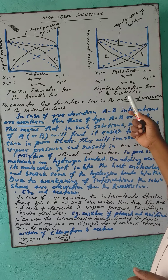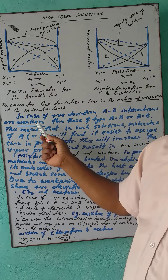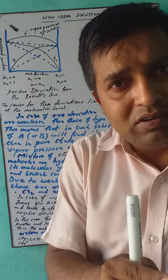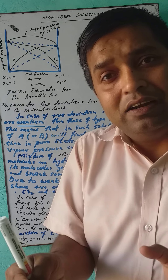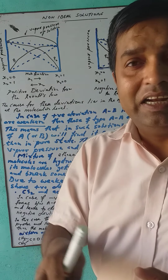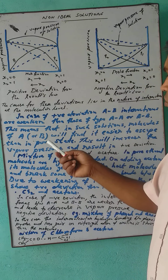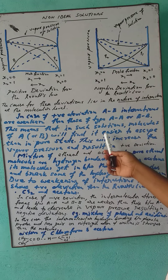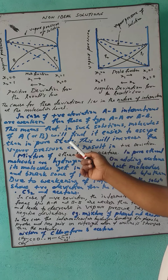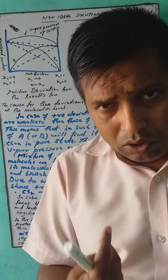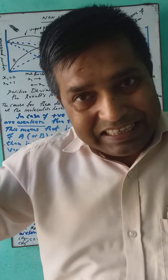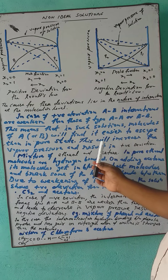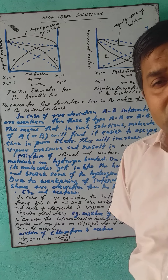In case of positive deviations, A-B interactions are weaker than A-A type and B-B type interactions — meaning solute-solute and solvent-solvent interactions are stronger. Therefore, molecules of A or B find it easier to escape than in the pure state, so vapor pressure increases, resulting in positive deviation.